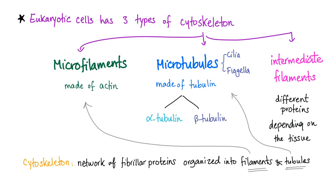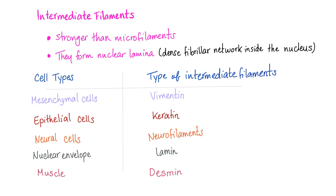There are three types of cytoskeleton: microfilaments, microtubules, and intermediate filaments — different proteins in different tissues. Intermediate filaments are stronger than microfilaments. They form something called nuclear lamina, which is a dense fibrillar network inside the nucleus. In mesenchymal cells or mesenchymal tissue they are called vimentin — it's a protein because it ends in I-N. In epithelial cells we have keratin. Neural cells have neurofilaments. The nuclear envelope has nuclear lamina. Muscle cells have desmin.